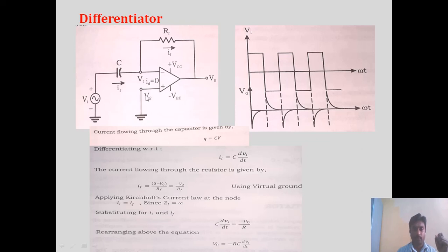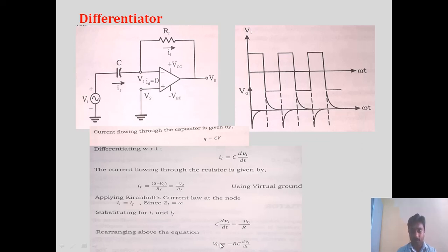Now we need to equate these two since I1 and IF are equal: C · dVI/dT = −V0/RF. Rearranging this expression, we get the expression for V0: it is minus RC · dVI/dT. So the final expression for V0 is equal to minus RC into dVI divided by dT.